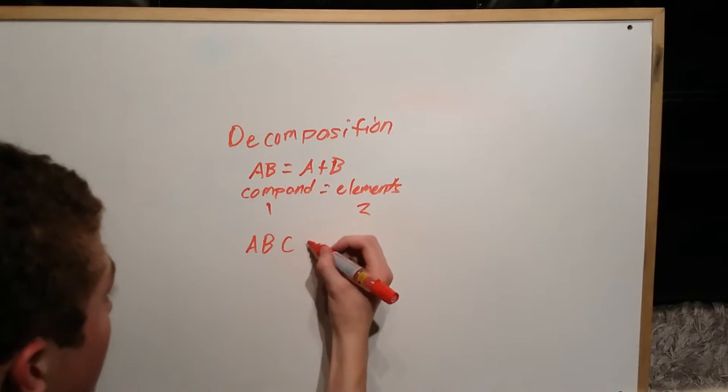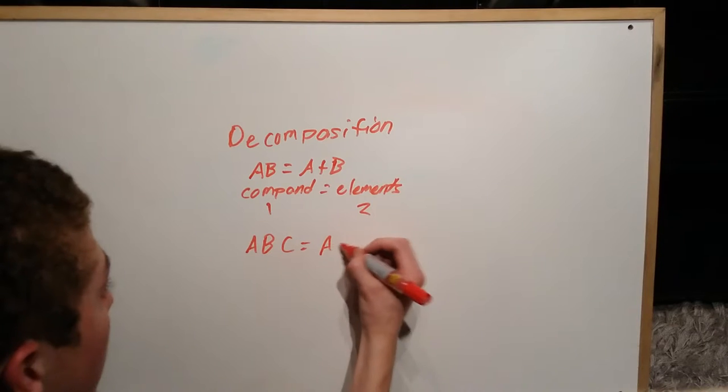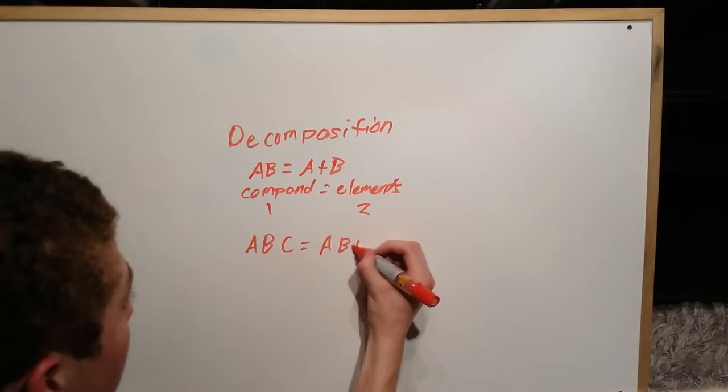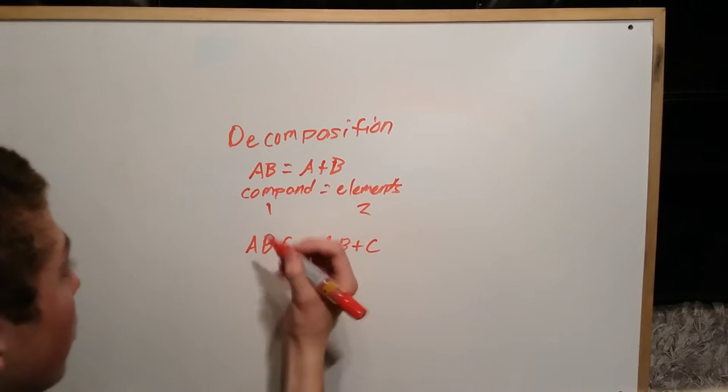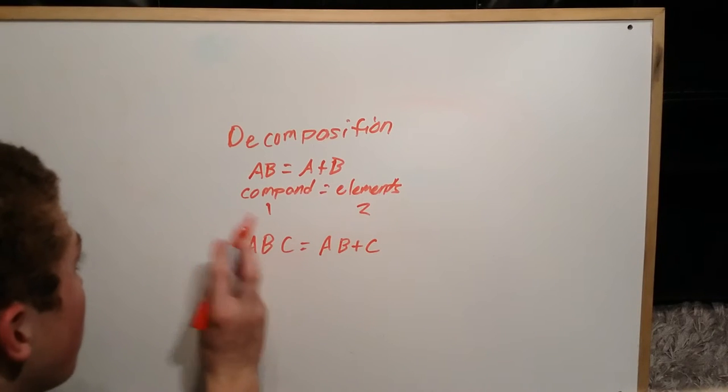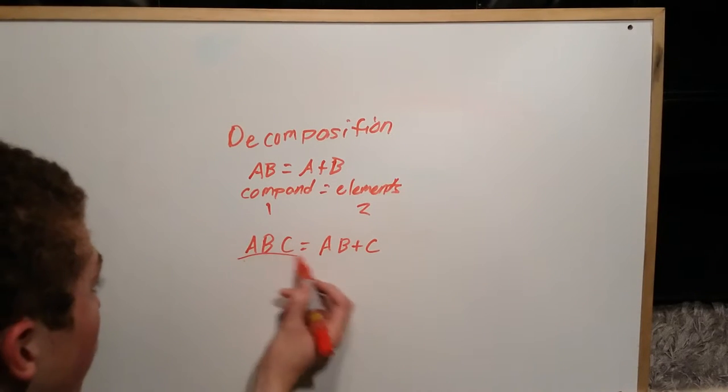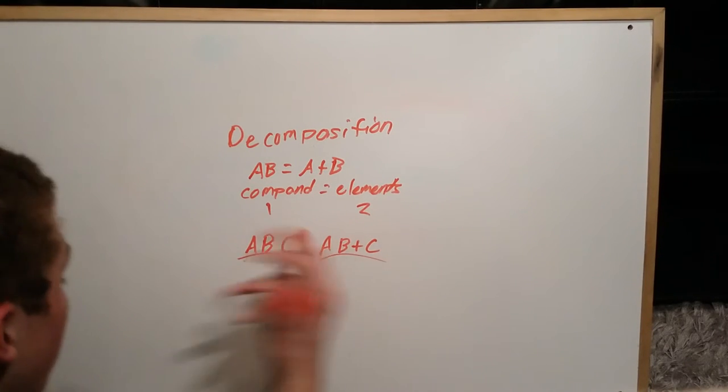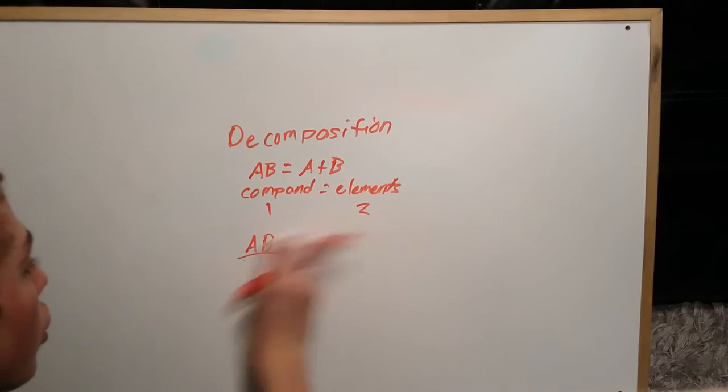So it could be ABC and then it'll break down to A, B, and C, but that's still decomposition. So all decomposition is is breaking down from one big thing into two.